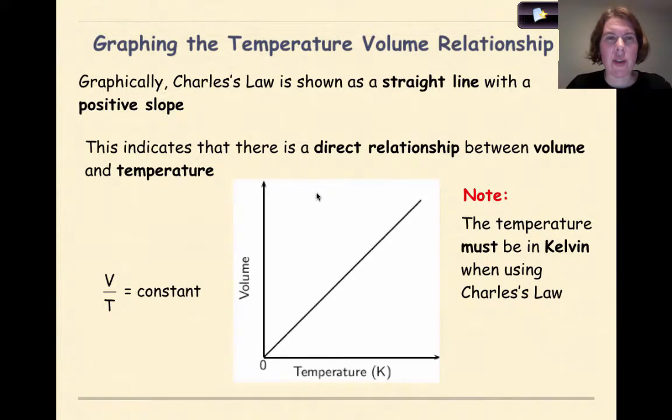Graphing the temperature-volume relationship. Graphically, Charles Law is shown as a straight line with a positive slope. This indicates that there is a direct relationship between volume and temperature. So what we see here is temperature in Kelvin increases, the volume will also increase directly. And again, one more time, the temperature must be in Kelvin when using Charles Law. So make sure you look on table T if you've forgotten how to convert from Celsius to Kelvin.